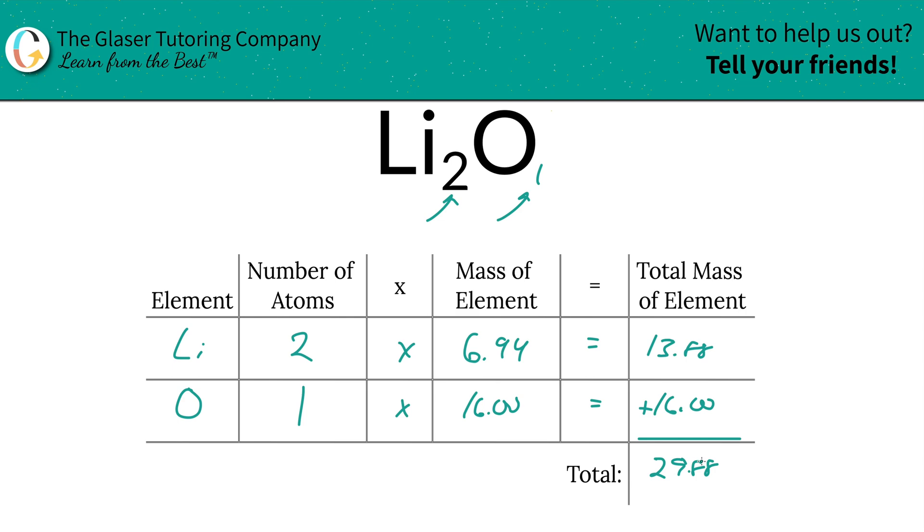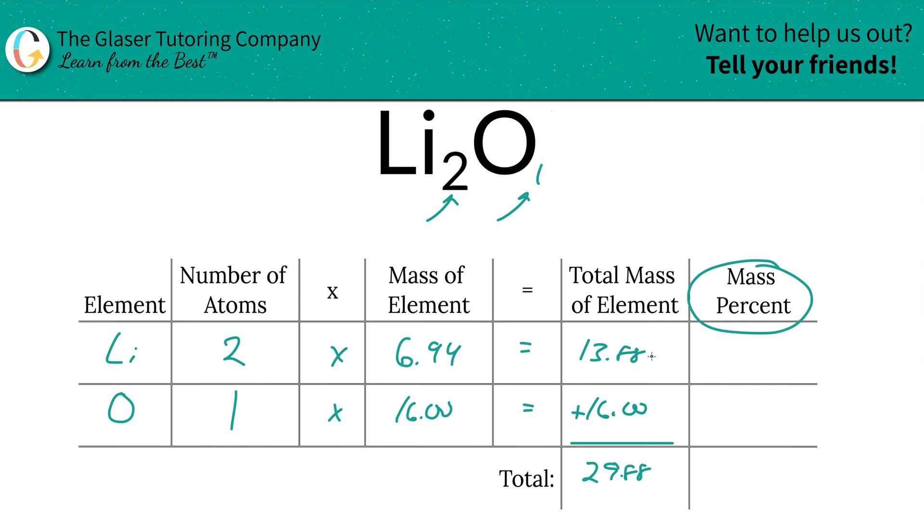So to find the mass percent or percent composition of lithium, we're going to take the total mass of the lithium—we're always looking at this column now to do the mass percents. 13.88 divided by the total mass of the entire compound, hence why we had to do that first, then multiply that fraction by 100 to get it into a percent. This should work out to be 46.45 percent, and that's the percent of lithium inside of lithium oxide.